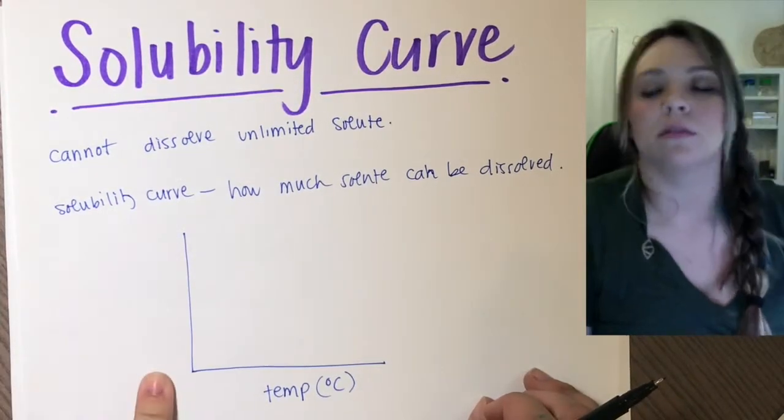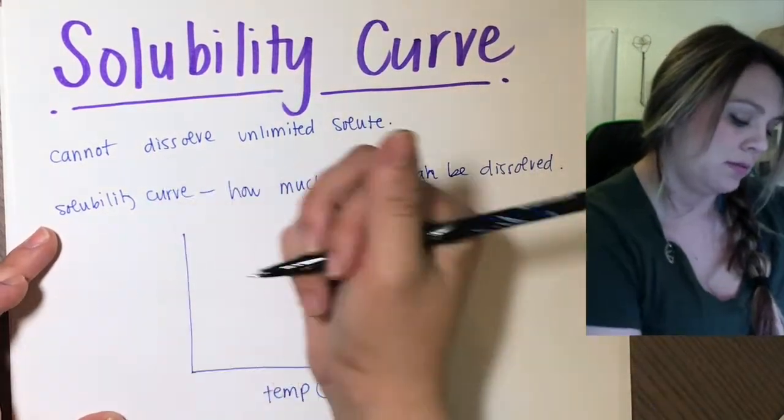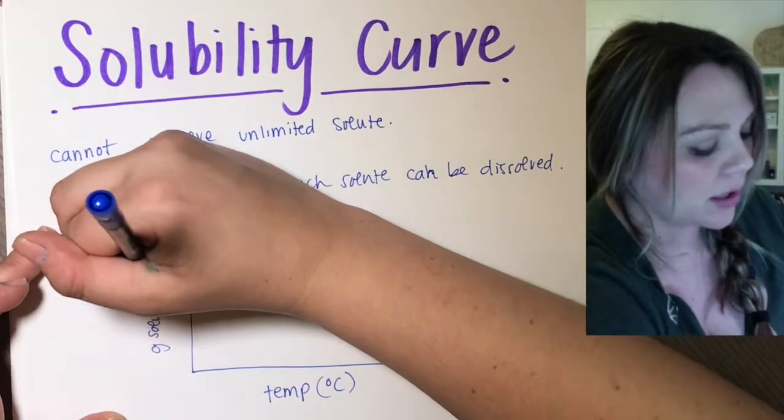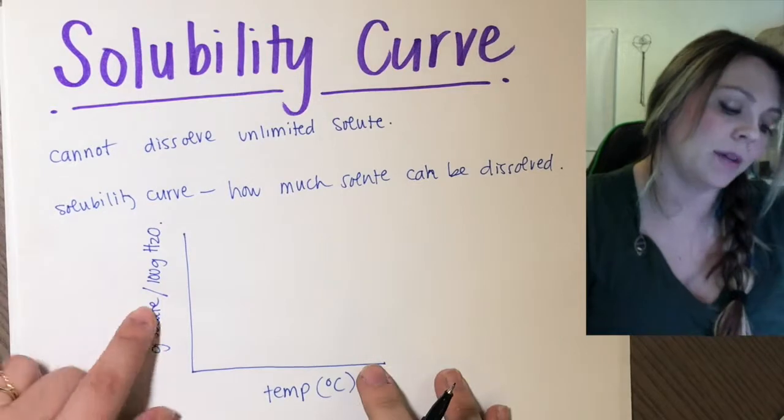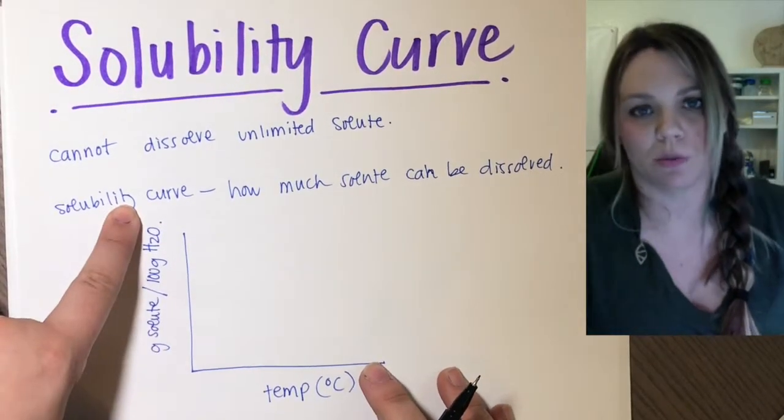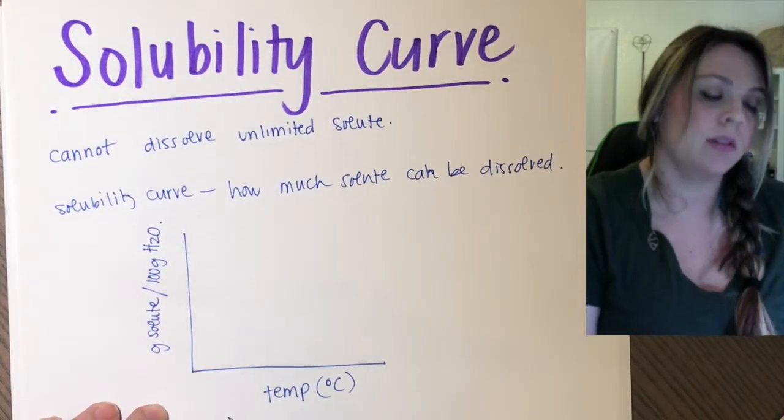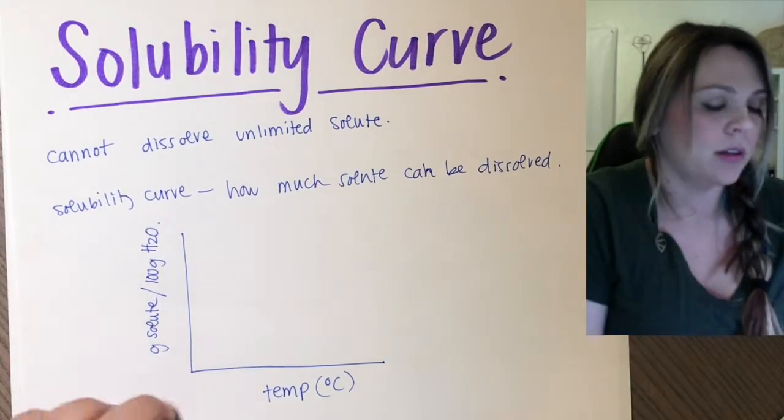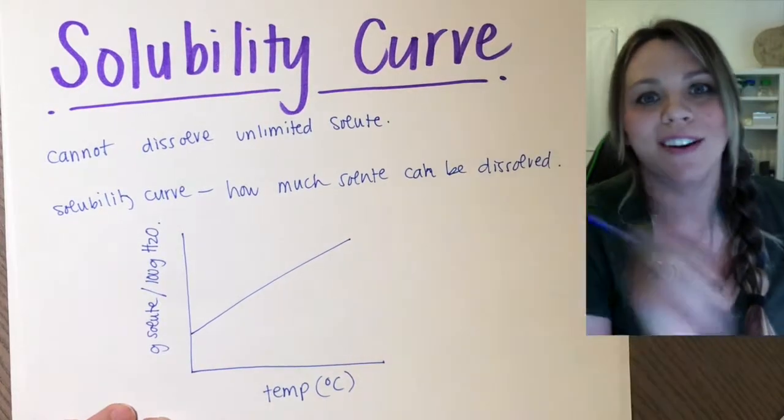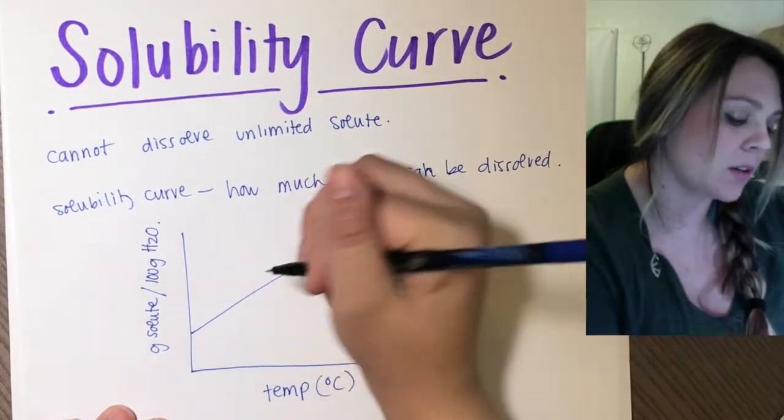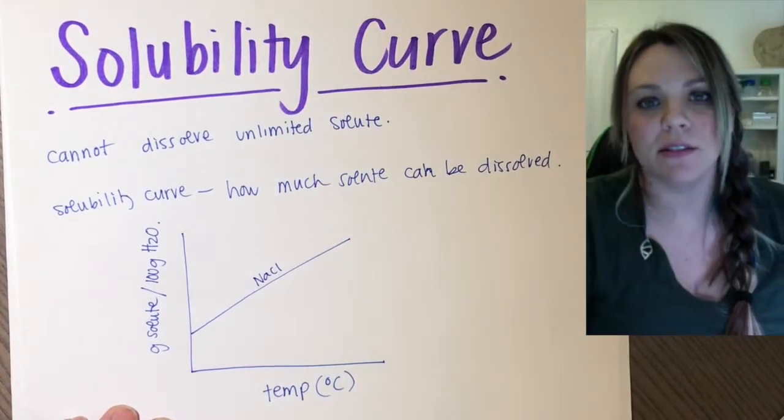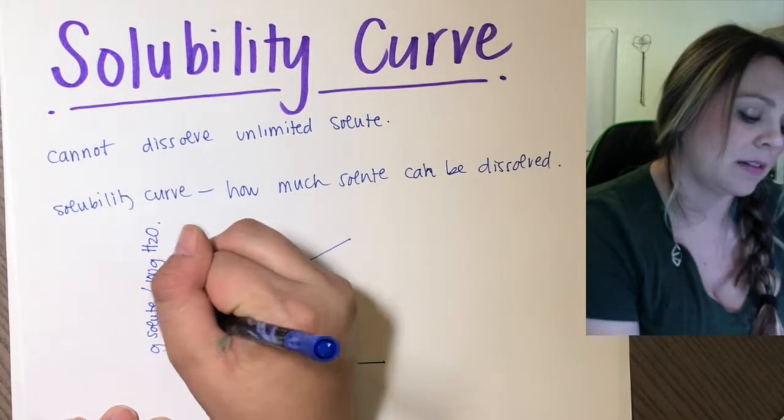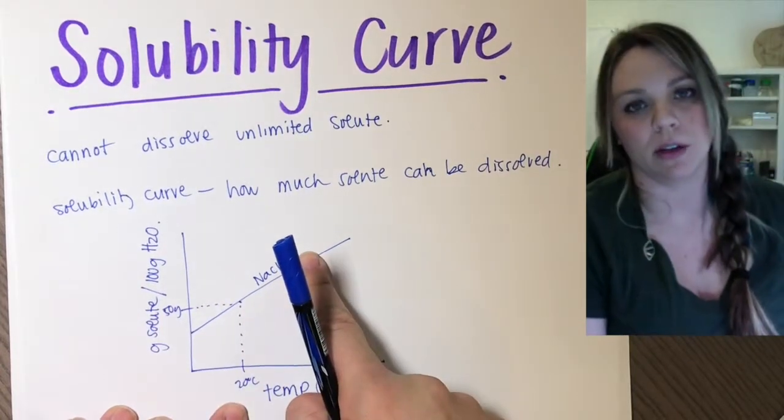On your y-axis, you have grams of solute that's dissolved per 100 grams of water. So how many grams of solute can actually be dissolved for every 100 grams of water? Not too complex. It gets a little messy, so you have to be careful about looking at a solubility curve. You'd have a line that tells you exactly which compound it is, and you'd be able to follow and see, at 20 degrees Celsius, say 50 grams of sodium chloride could be dissolved.